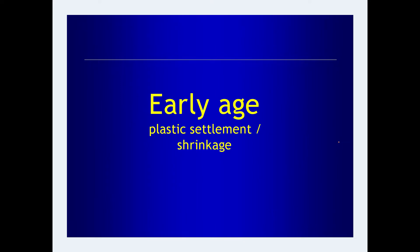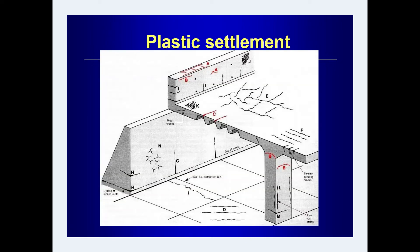First, we shall see early age cracks. Two main types of early age cracks we have seen while defining different cracks: plastic settlement cracks and plastic shrinkage cracks. In the general crack diagram, plastic settlement cracks are shown as types A, B, and C.